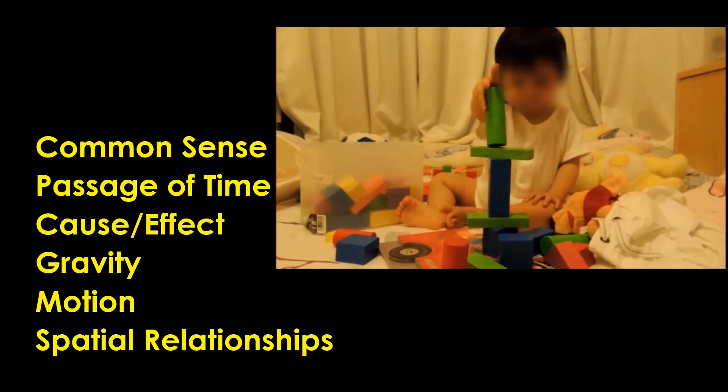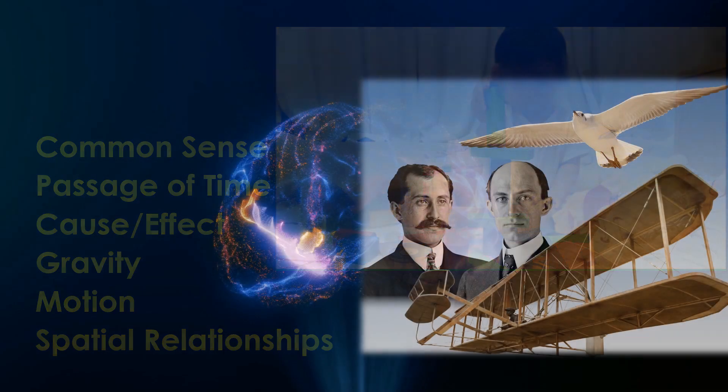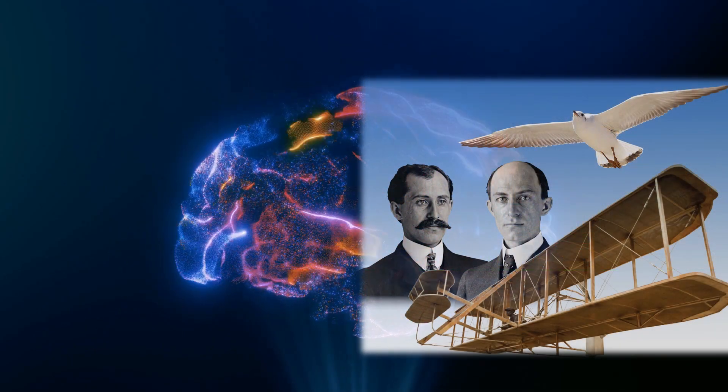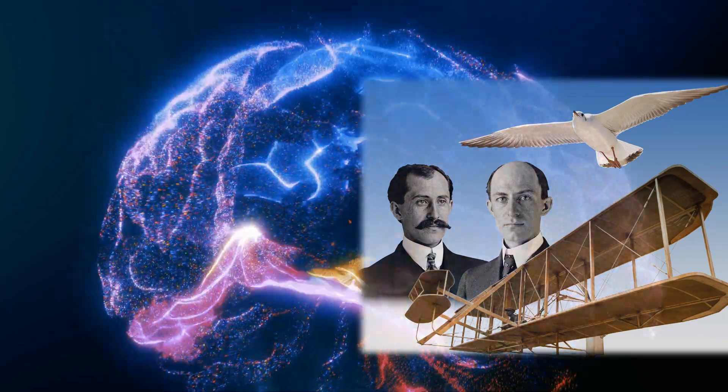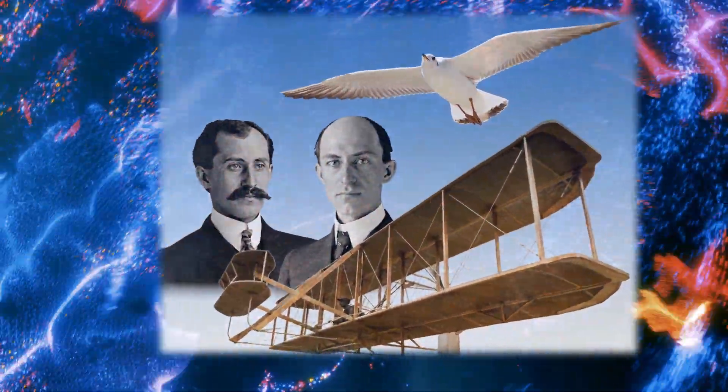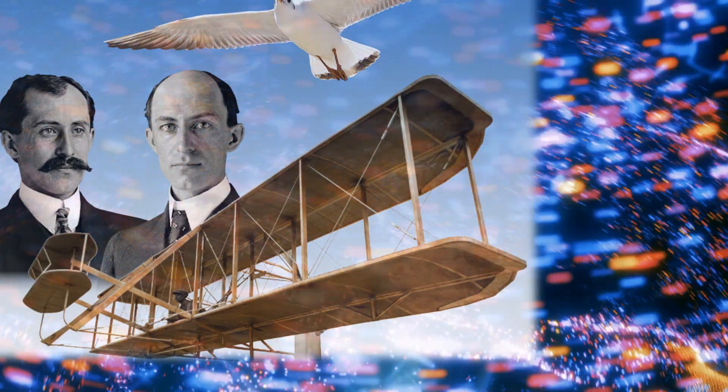We have an excellent example of general intelligence in the human brain, so like the Wright brothers who analyzed birds when designing the first airplane, let's compare the human brain's similarities and differences with today's AI.